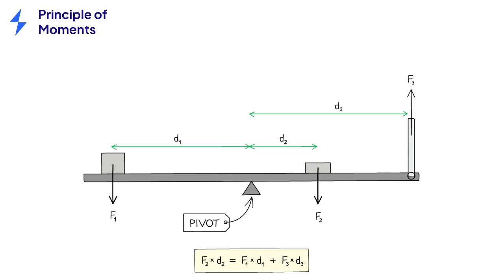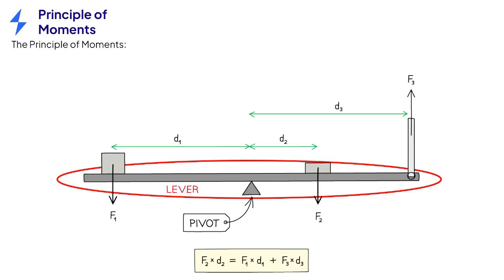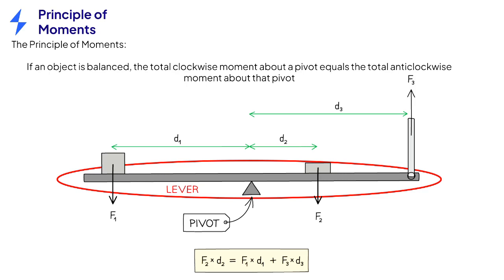This diagram shows another common type of lever, a beam balancing on a pivot. The principle of moments states that if an object is balanced, the total clockwise moment about a pivot equals the total anticlockwise moment about that pivot.